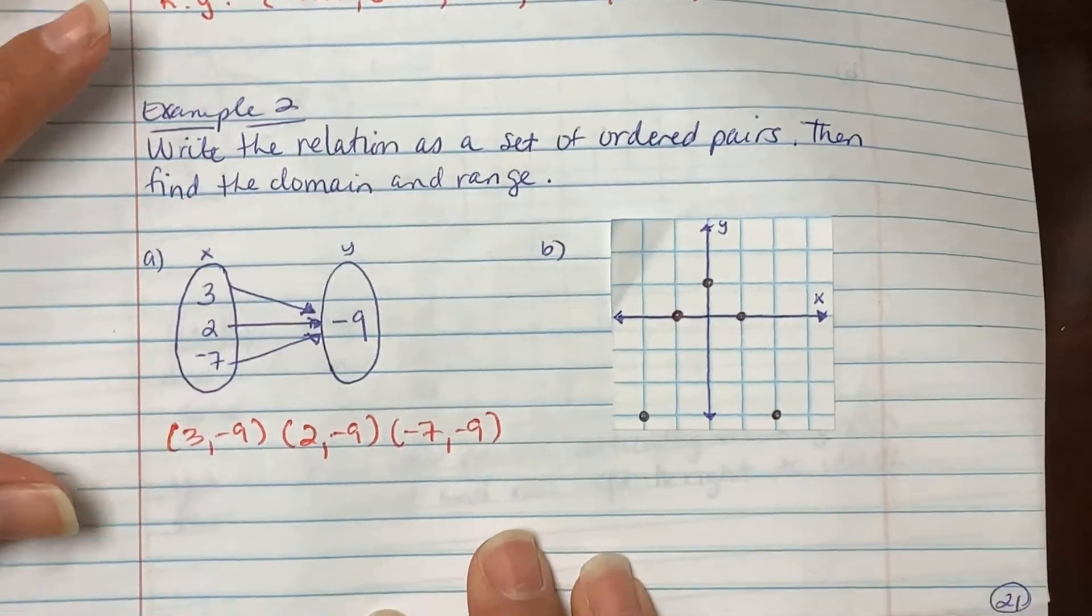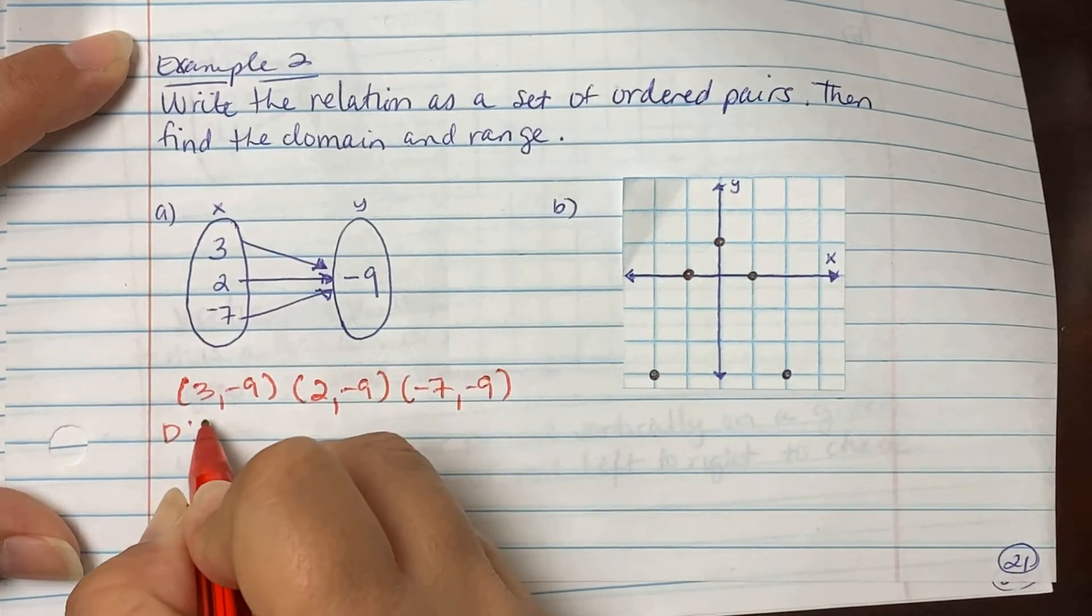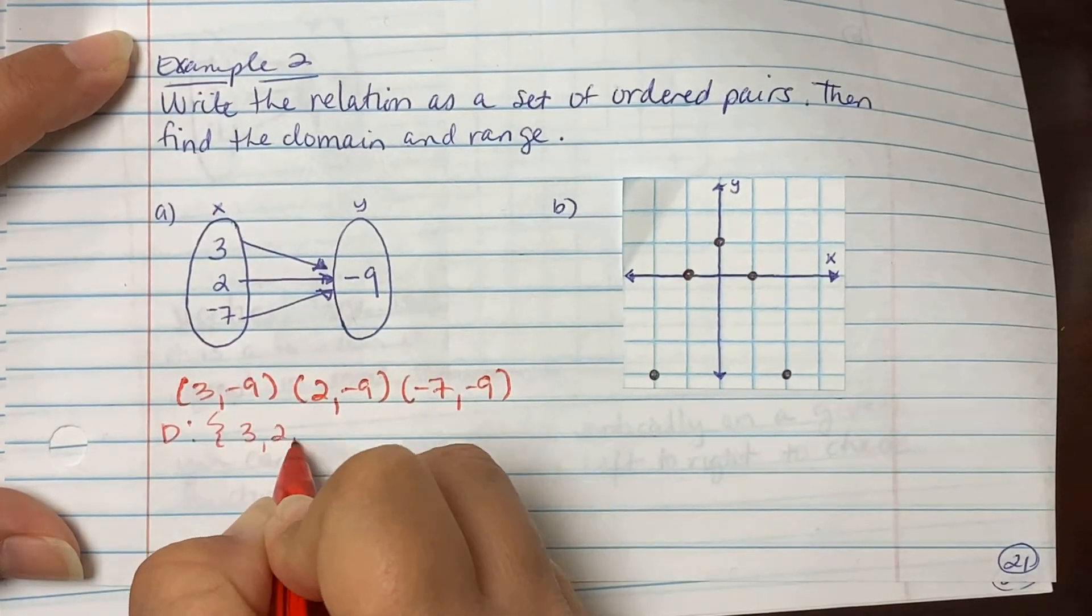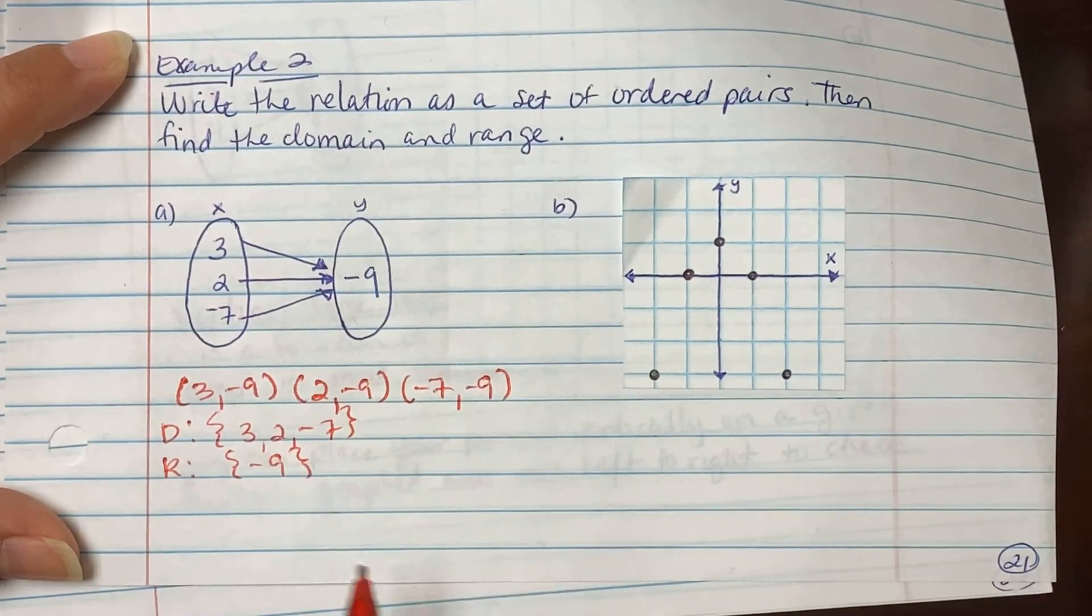It also wanted us to list our domains and ranges. Well, domain is 3, 2, negative 7. Our range is just the negative 9.